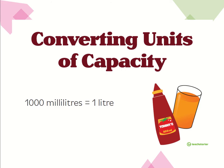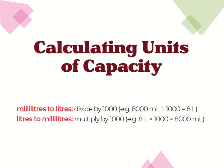We know that in one liter there are 1,000 milliliters. If we are changing or trying to find how many milliliters there are in a liter, then we'll need to multiply by 1,000. For example, if we want to find out how many milliliters are in 8 liters, all we have to do is times it by 1,000 — you just add the zeros to the end.